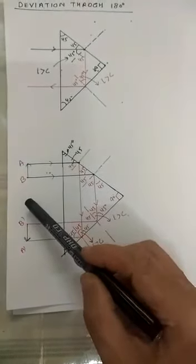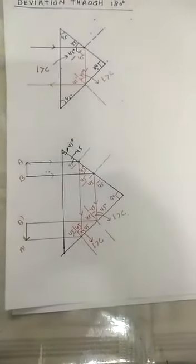Similarly, if AB is the object, then A dash B dash will be its image. And this is total internal reflection.